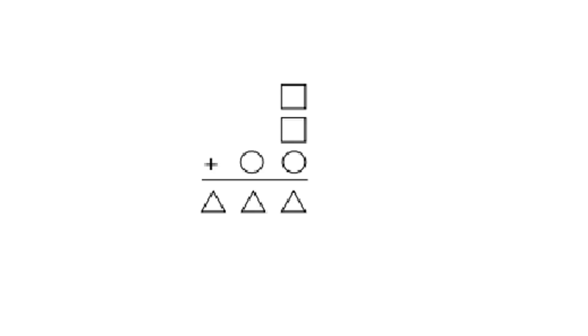In the sum shown, different shapes represent different digits. What digit does a square represent?